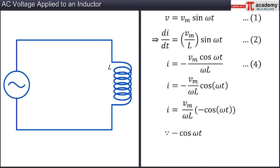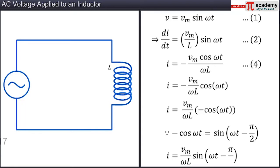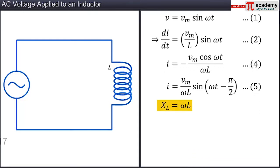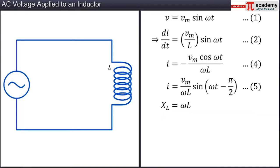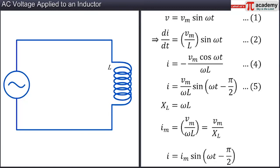Writing minus cos omega t as sine omega t minus pi by 2, we get I equal to Vm by omega L times sine omega t minus pi by 2. Let this be equation 5. Now, we substitute omega multiplied by L with XL, which is known as the inductive reactance of the circuit. We get the amplitude of the current Im equal to Vm by omega L or Vm by XL, since it is the maximum current value attainable. Hence, equation 5 becomes I equal to Im sine omega t minus pi by 2. Let this be equation 6.